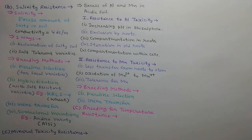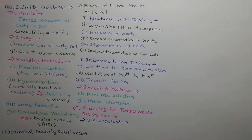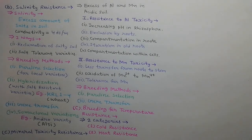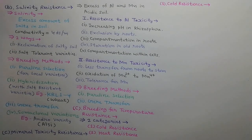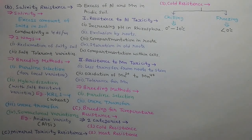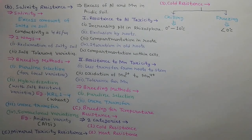Next we will discuss about the breeding for temperature resistance. Temperature resistance is divided into two categories: cold resistance and heat resistance. Regarding cold resistance, chilling refers to 0 to 10 degrees centigrade temperature, and freezing refers to below 0 degrees centigrade temperature.